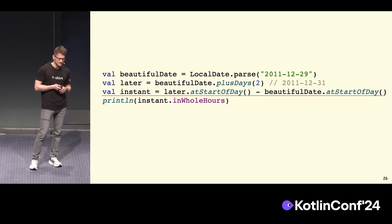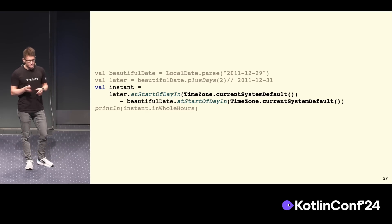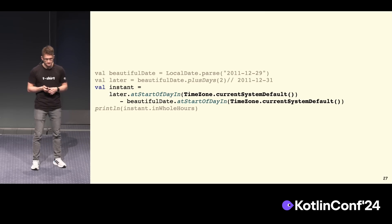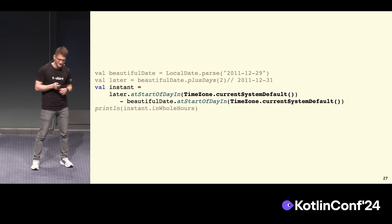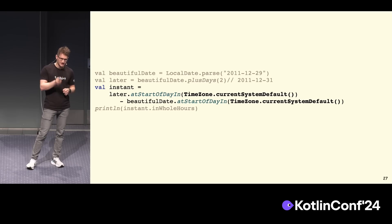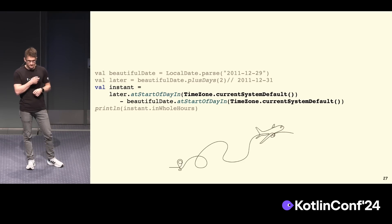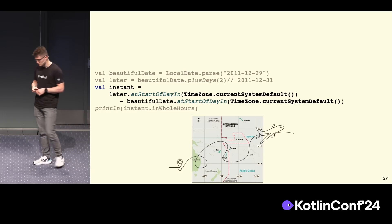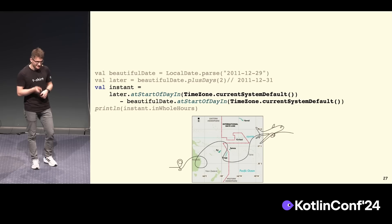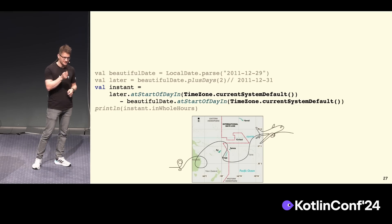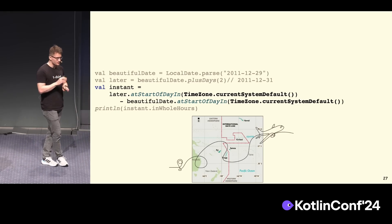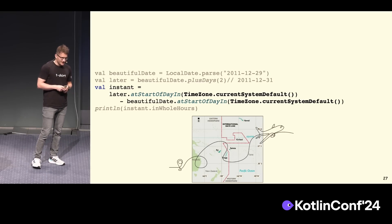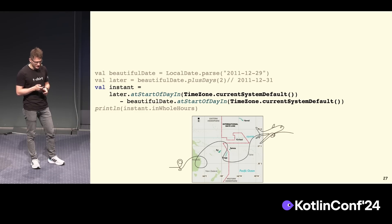We want to fix that, so we add time zones to the functions — which is already less beautiful, but at least it fixes the problem. Or does it? If we write this code and deploy it on a user's mobile, and the user happens to be on an aircraft which at the moment of this computation crosses a time zone boundary, the default system time zone will change. And this computation will stop making any sense. This error would be impossible to debug, impossible to figure out — it's really obscure, just incorrect computation.